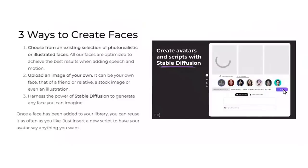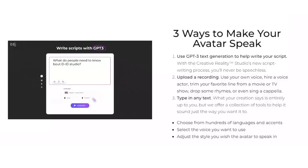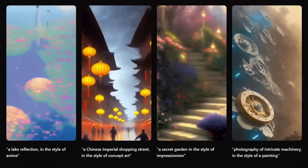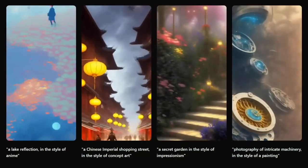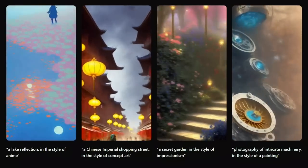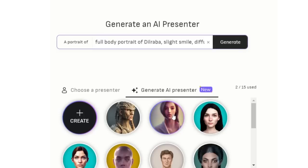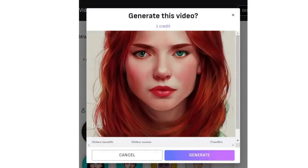For now, let's check out an AI text-to-video tool that's currently available. First we're going to look at one that allows you to generate and animate images, and then we're going to check out one that actually allows you to generate and animate talking avatars.